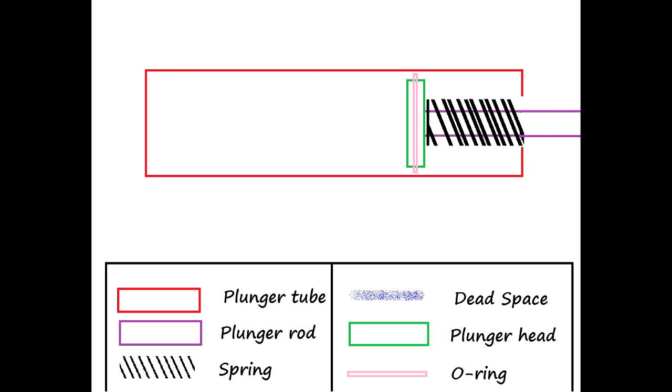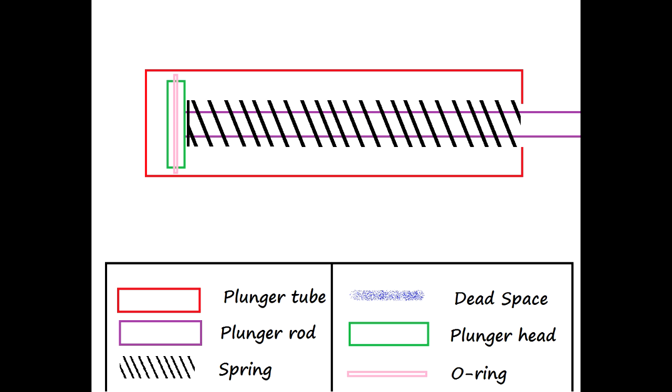When primed, the plunger rod is pulled back which compresses the spring and readies the plunger head. When the trigger is pulled, the plunger head advances which compresses the air and propels the dart.